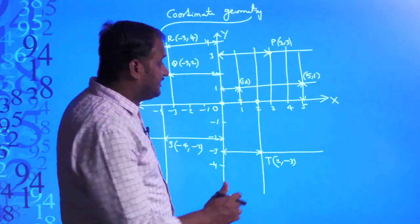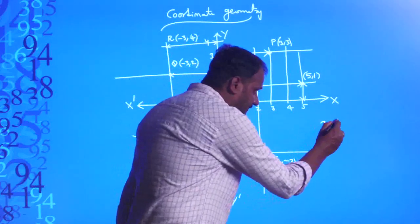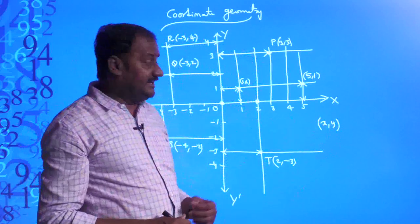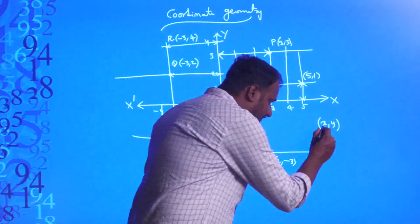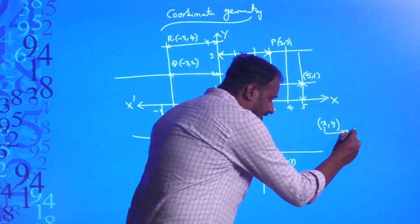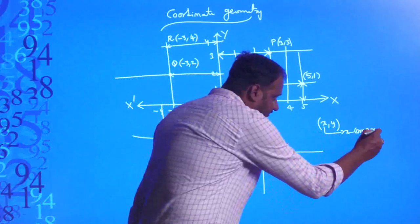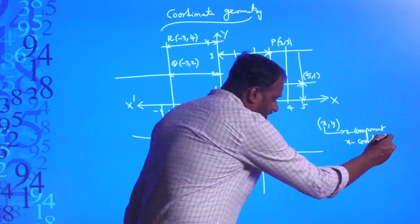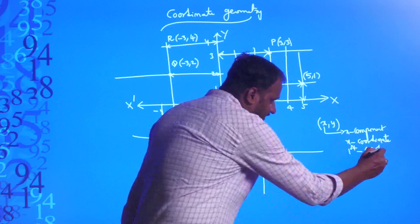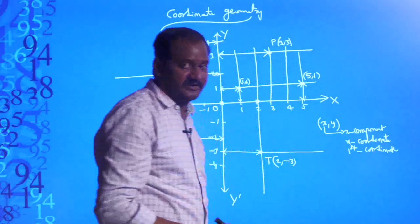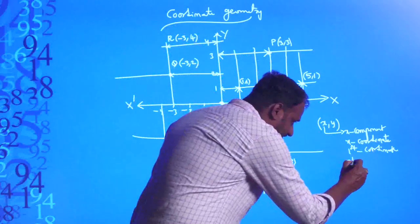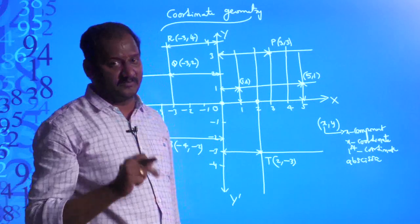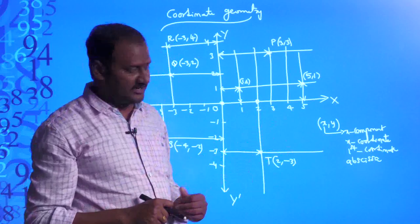Every single point is in the form of x comma y. In a point (x, y), that x is called the x-component, or x-coordinate, or first coordinate. There is another name for this x-component: it is called the abscissa.